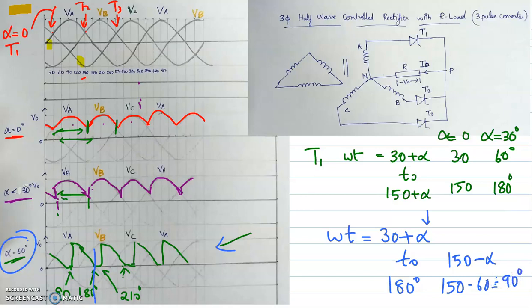We can clearly see that the conduction period runs from 90 to 180 degrees for alpha equal to 60 degrees. Therefore, for a resistive load, the maximum possible firing angle is 150 degrees — that is the maximum firing angle achievable with a resistive load.